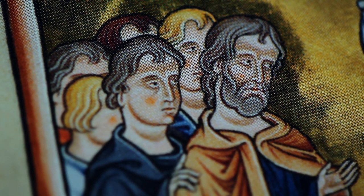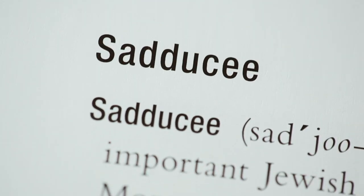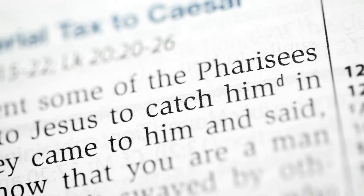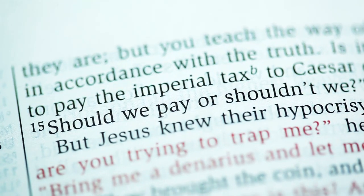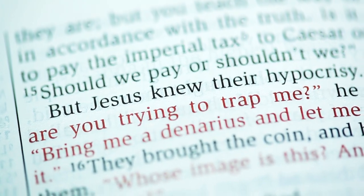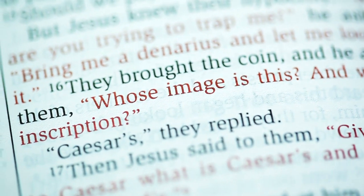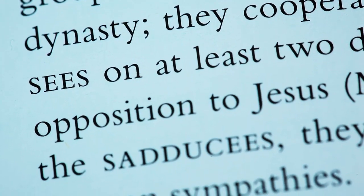In Mark chapter 12, we are introduced to three different groups of people: the Pharisees, the Herodians, and the Sadducees. Each group is trying to catch Jesus and trip Him up with their questions. When you look up each group in the Essential Bible Dictionary and read the descriptions, you find out that they don't really want answers. Instead, the questions they ask reveal their devious opposition to Jesus.